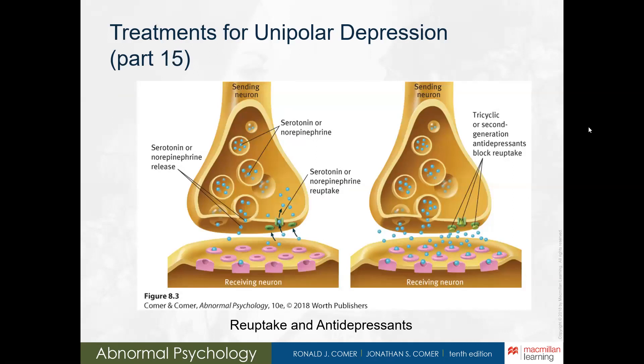Figure 8.3 illustrates the treatment for unipolar depression. Soon after a neuron releases neurotransmitters like norepinephrine or serotonin into the synaptic space, it activates a pump-like reuptake mechanism to reabsorb excess neurotransmitters. In depression, however, this reuptake process is too active, removing too many neurotransmitters before they can bind to a receiving neuron. Tricyclic and most second-generation antidepressant drugs block this reuptake process, enabling norepinephrine or serotonin to remain in the synapse longer and bind to the receiving neuron.